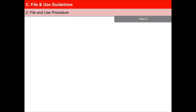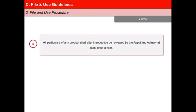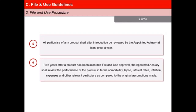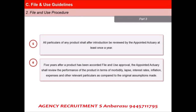Fifth, after introduction, all particulars of any product shall be reviewed by the appointed actuary at least once a year. And sixth, five years after a product has been accorded file and use approval, the appointed actuary shall review the performance of the product in terms of morbidity, lapse, interest rates, inflation, expenses and other relevant particulars as compared to the original assumptions made.